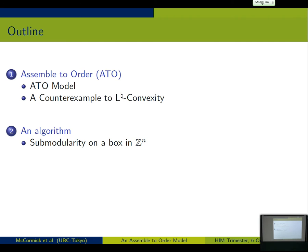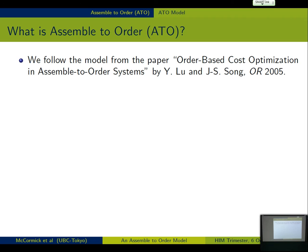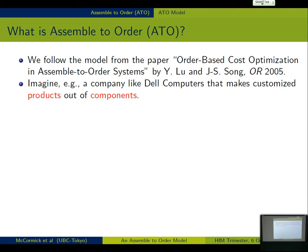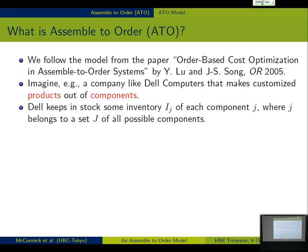So assemble to order, how's this work? This is based on a paper in operations research from 10 years ago by Lu and Song. So let's imagine Dell computers, that they assemble products out of components at a first approximation. So they have some inventory of each component. You can think like disk drives, memory chips, motherboards, monitors, whatever. And there's some universe J of all possible components. So for us it's going to be useful to think of a product as essentially the subset of components that make up that product. So a product is a subset of the universe of components.